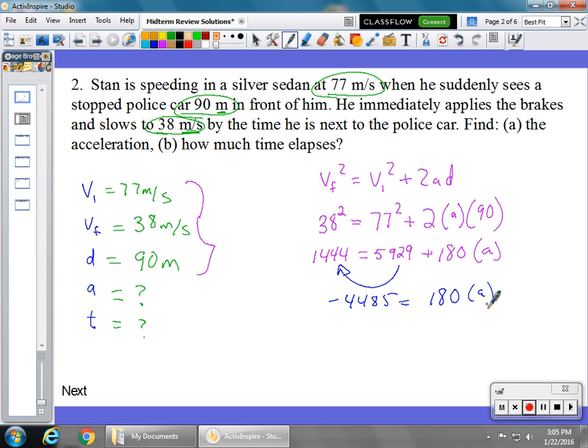We're going to divide both sides by 180 and you're going to get negative 24.9 meters per second squared. You need units and you need a direction. It's very important that this negative is here. It's slowing down, so the acceleration is in the opposite direction, it's in the backwards direction. Negative 24.9 meters per second squared. And we can add it to our table.